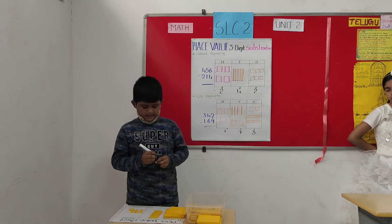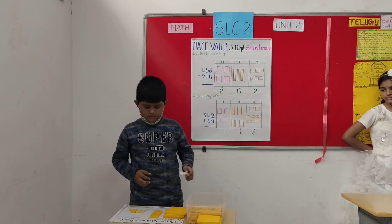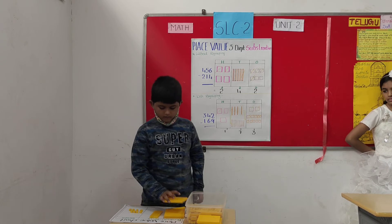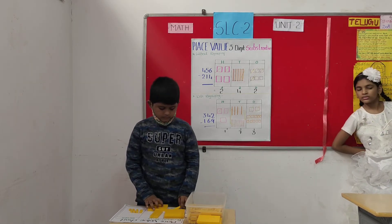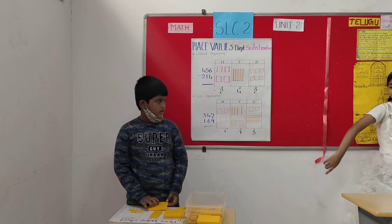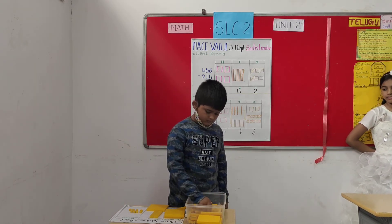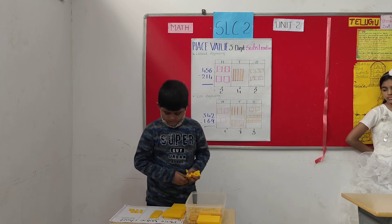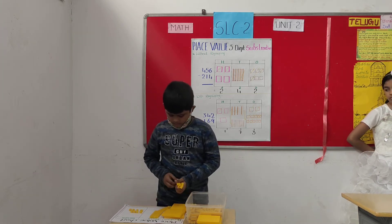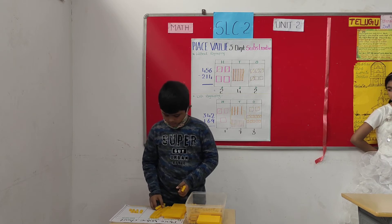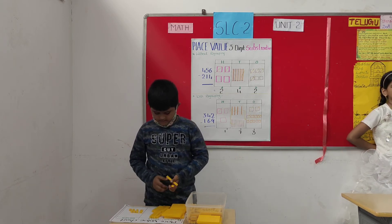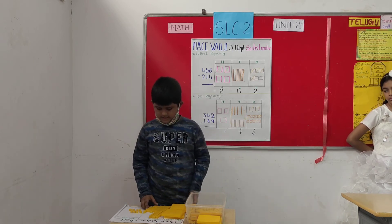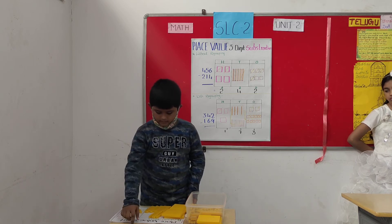In the tens place we have 4 tens. We can't take 8 from 4, so I am going to borrow 1 hundred into tens. Instead of this 1 hundred, I am taking 10 tens. So, we have to subtract 8 from 14.